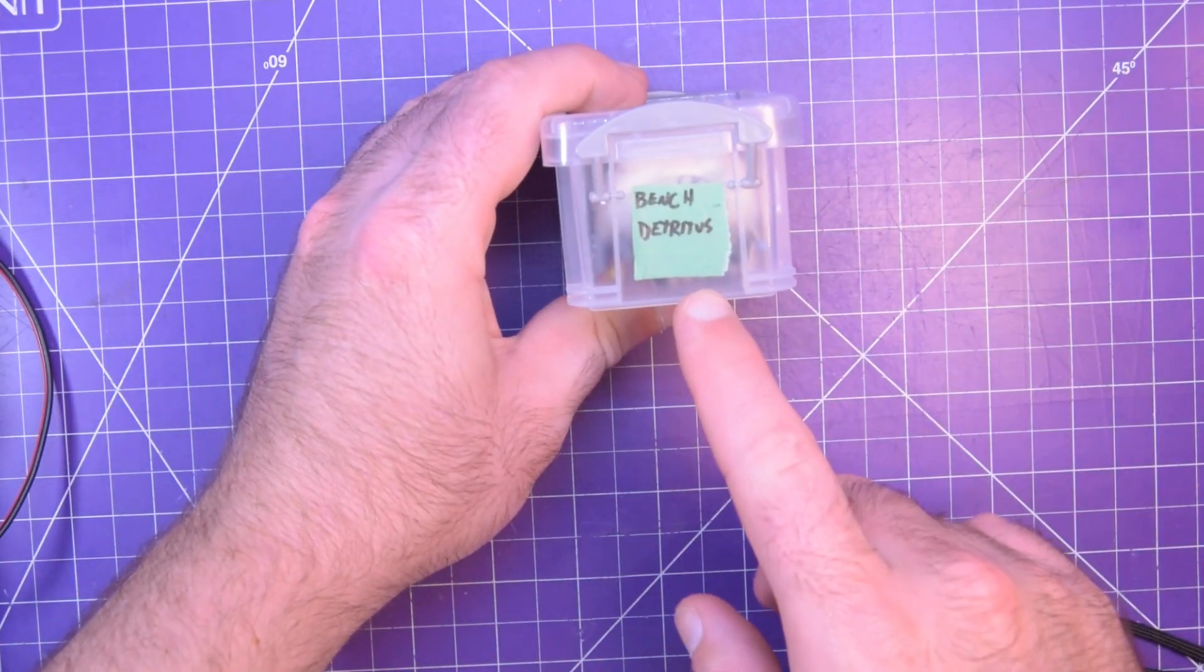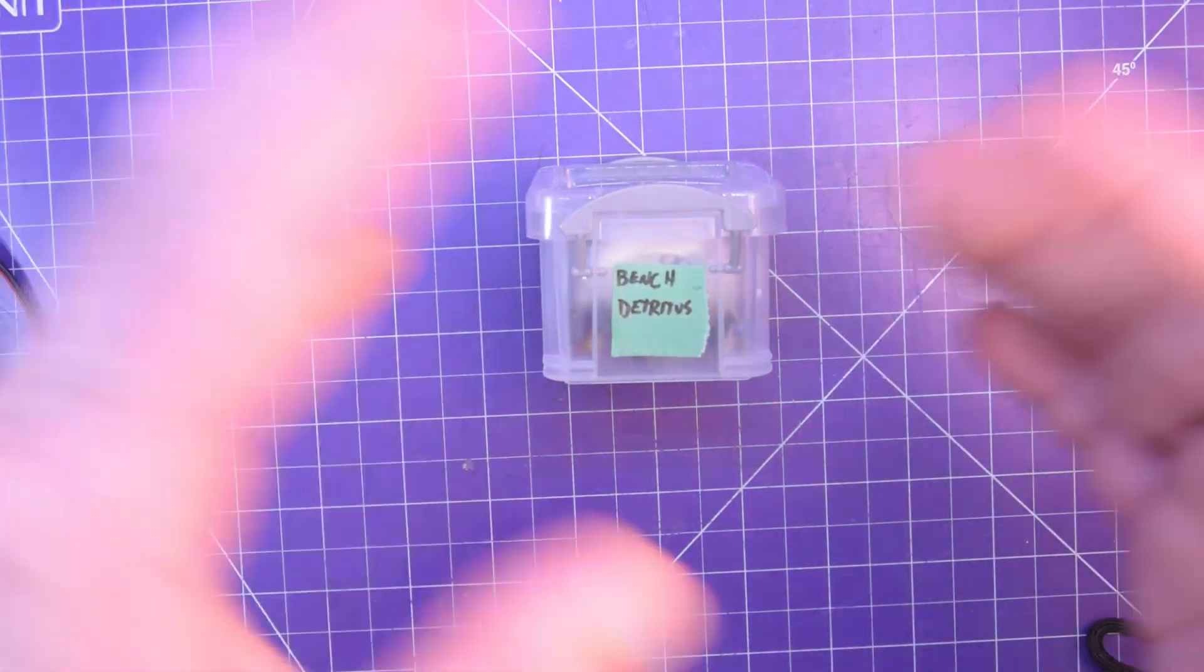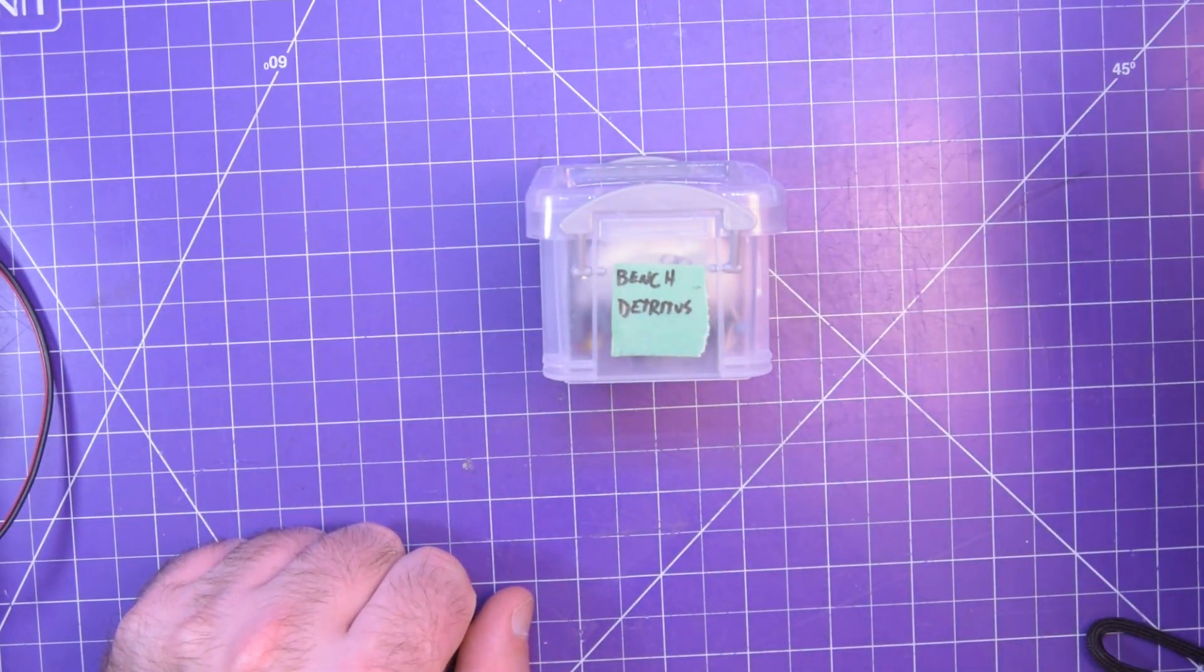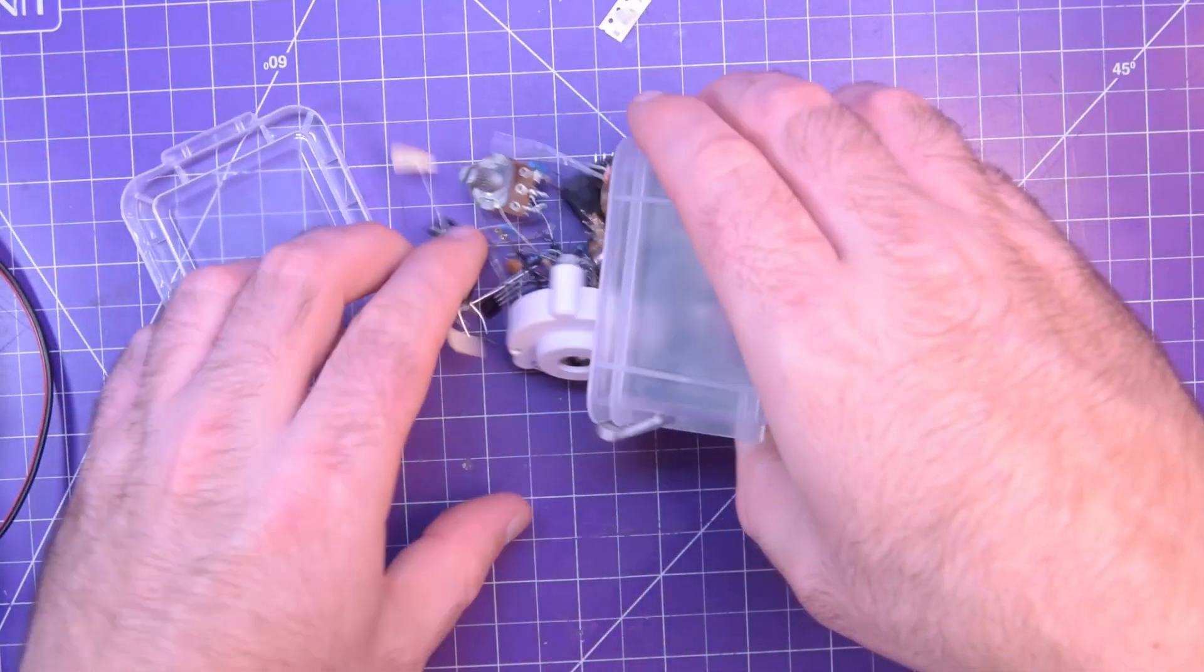So here I have the bin that I just throw all the stuff that's left on my bench after a project into to be sorted later, aka never. Let's see if I can find the component I need in here.